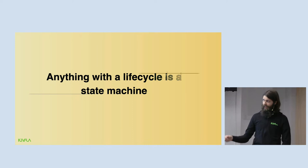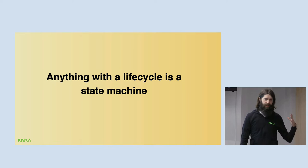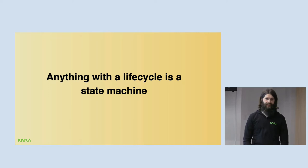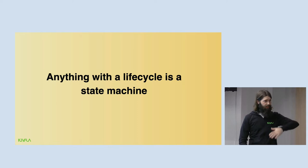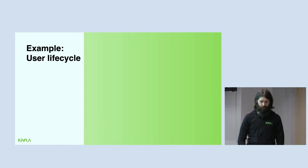I'll say this: anything with a life cycle is a state machine. Most things have a life cycle — customer journeys, accounts, customers. If it has a life cycle, it has states and transitions, that's a state machine. You can formalize it, code against it, make contracts with it, and if you use a static type language you can enforce it at compile time. I'm going to show how to do that using Dialyzer in Erlang, and as an example we'll talk about the user life cycle.